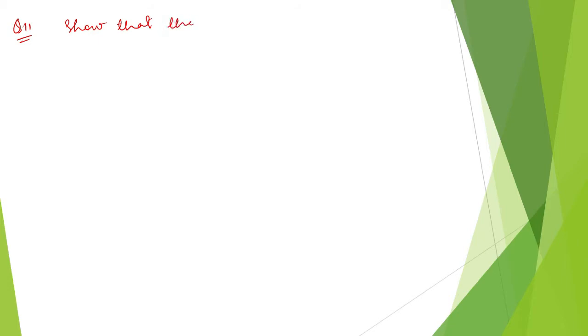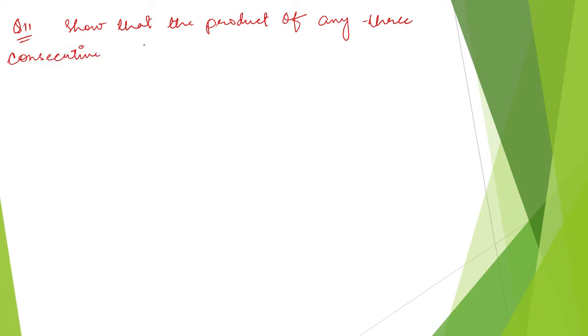Question number 11: the product of any three consecutive even integers is divisible by 48.